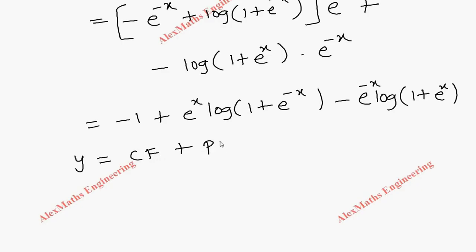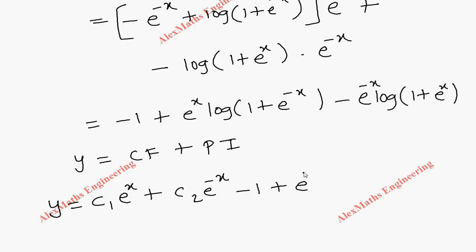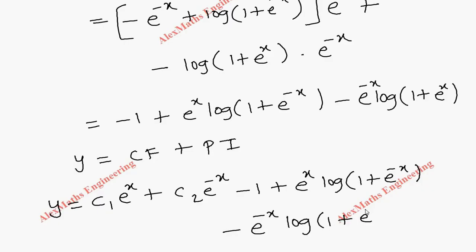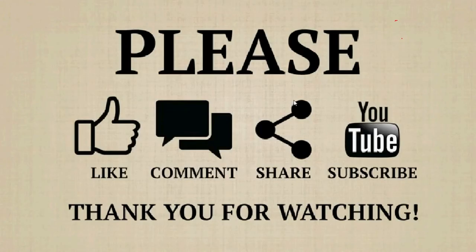The complete solution is y = CF + PI. Therefore y = c1·eˣ + c2·e^(-x) - 1 + eˣ·log(1 + e^(-x)) - e^(-x)·log(1 + eˣ).